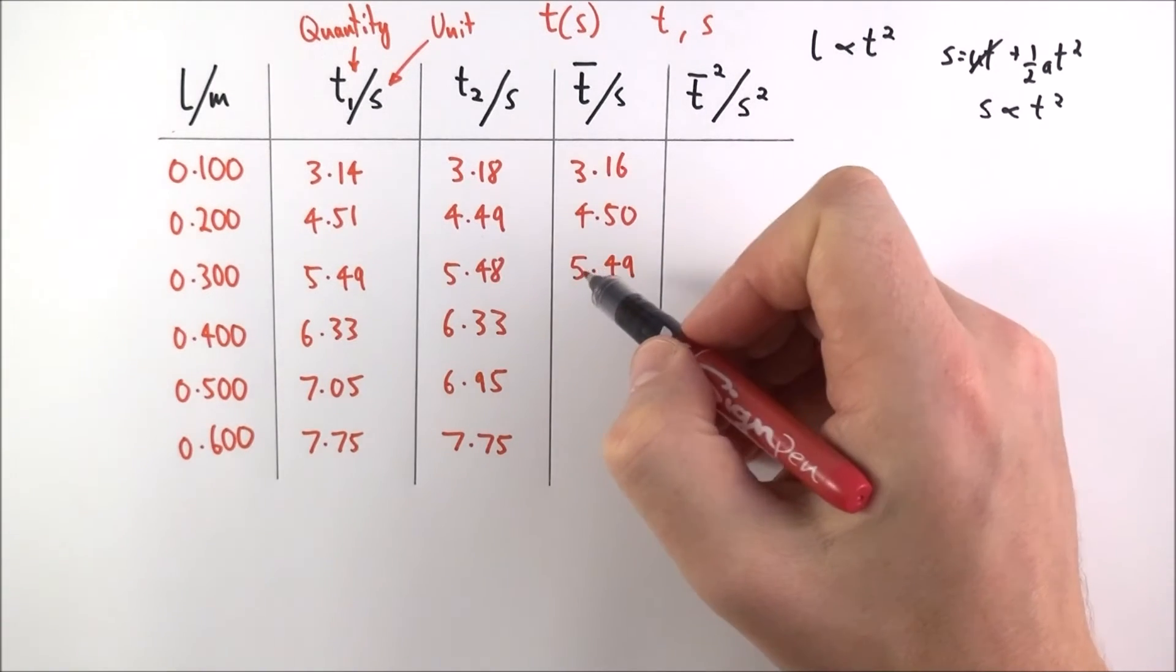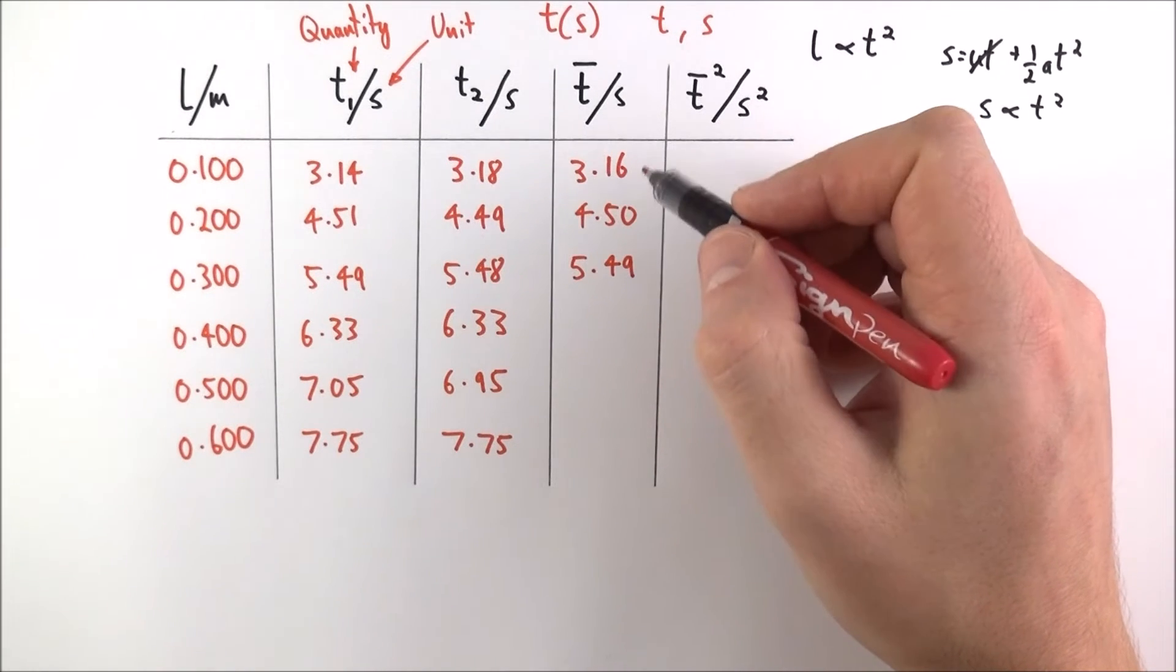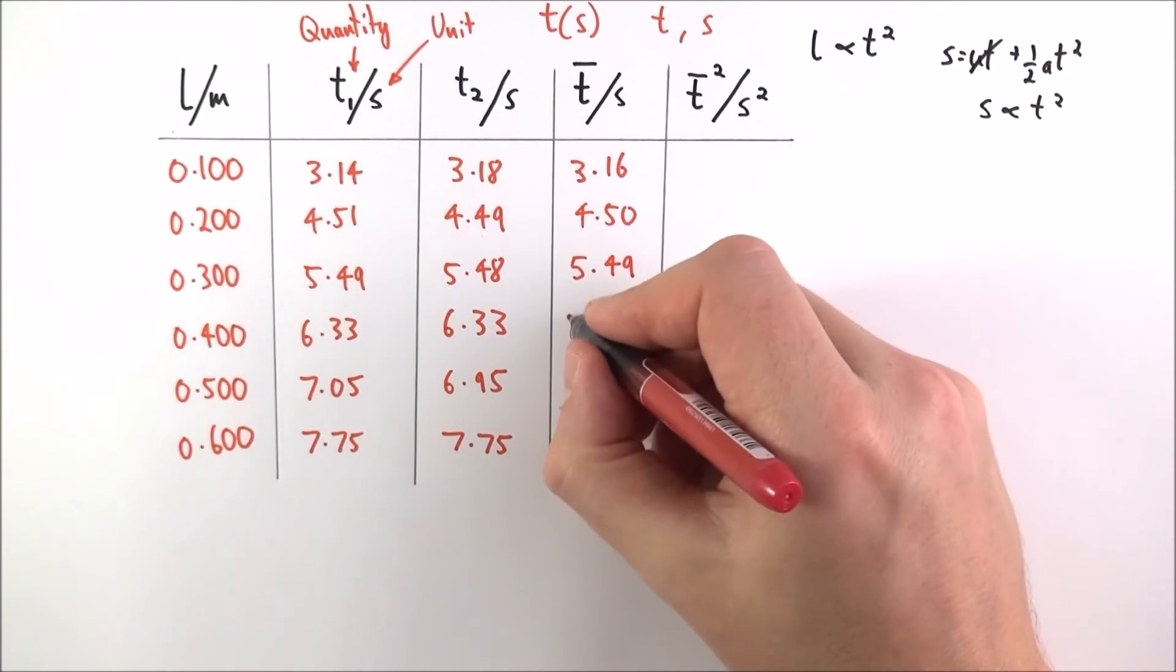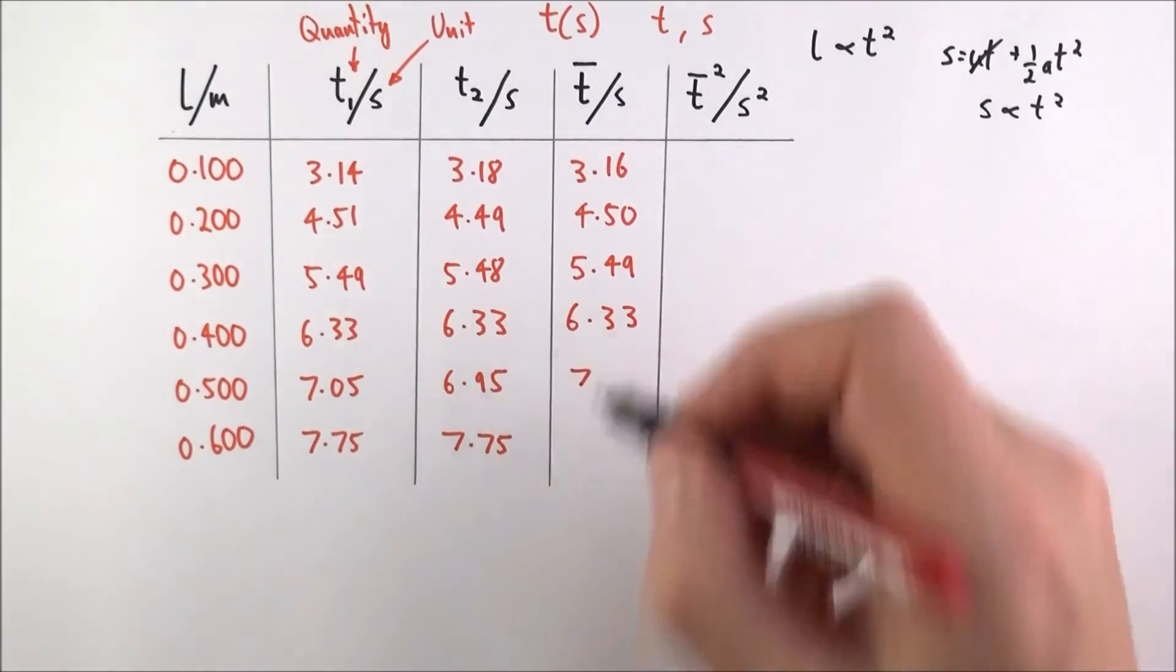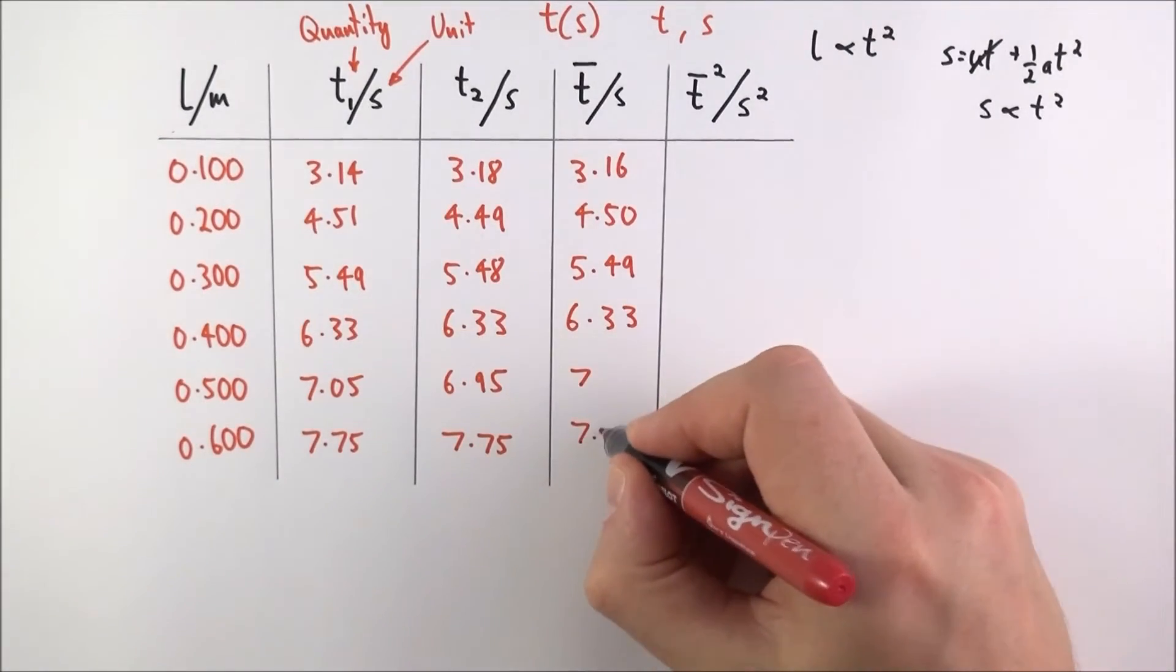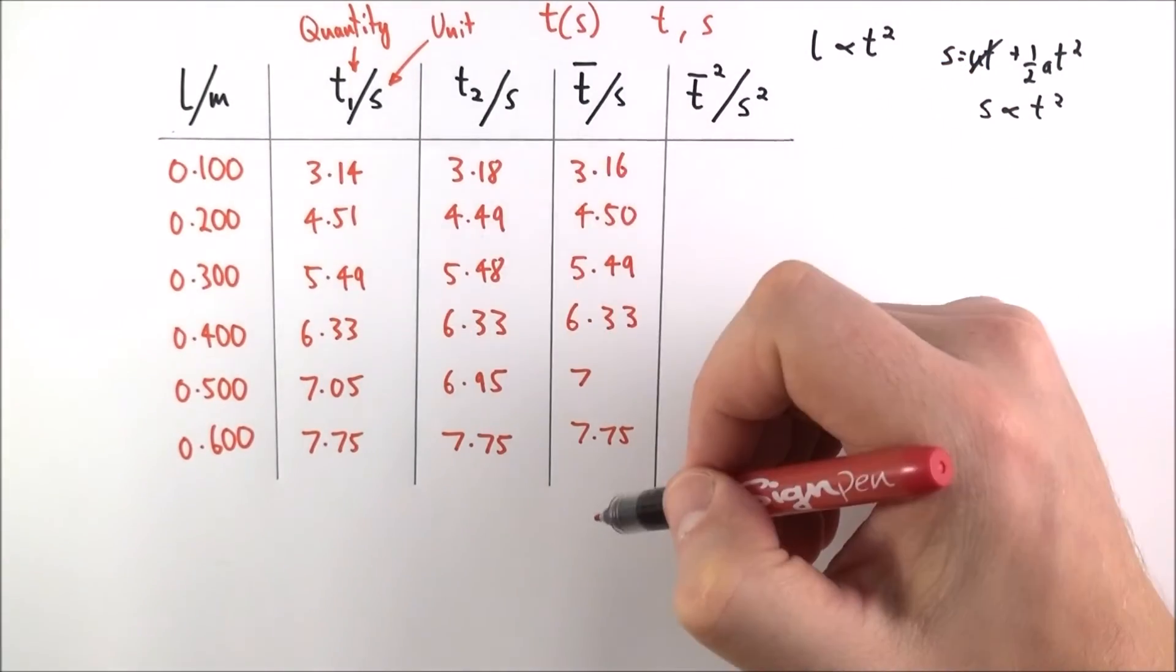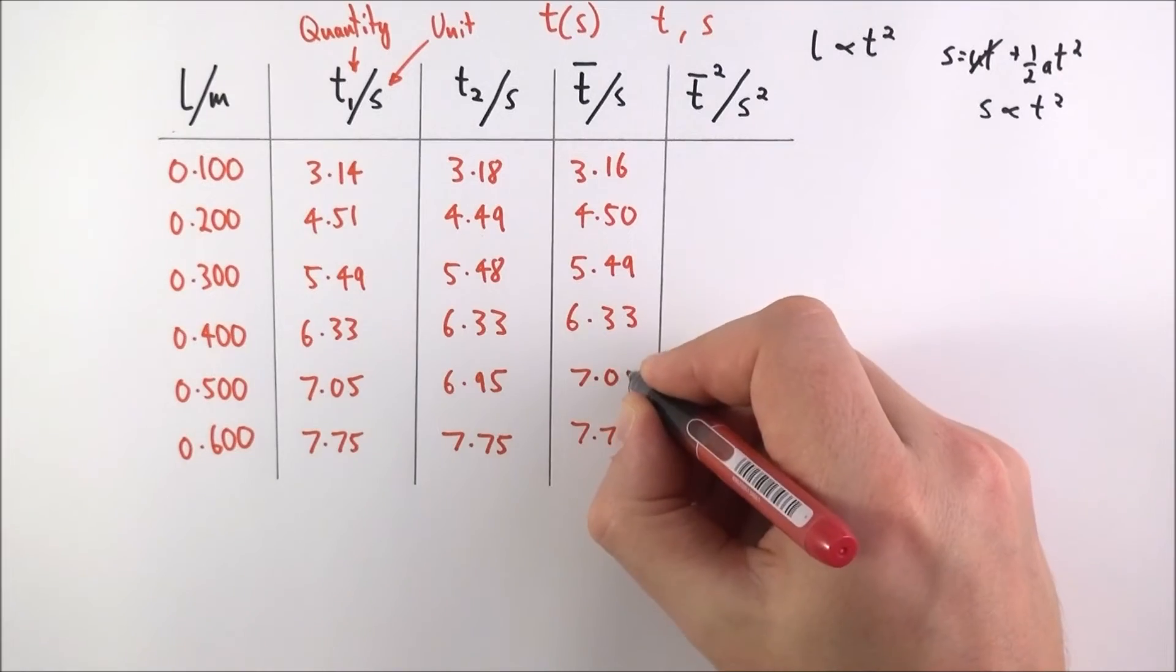Even though the average is 5.485 I've kept all of my data in this table to the same amount of significant figures which is based on this data here. As I go down that's 6.33. This value is 7 and this is 7.75 but again we need to keep everything to the same amount of significant figures. So although this is exactly 7 I should write it as 7.00.